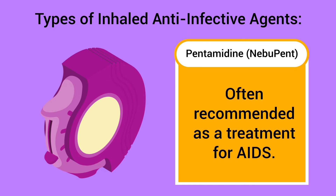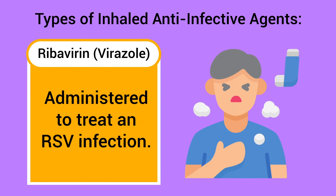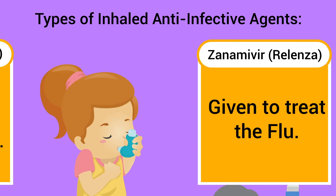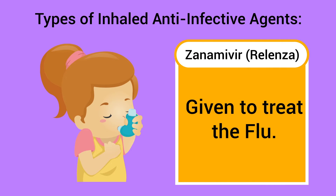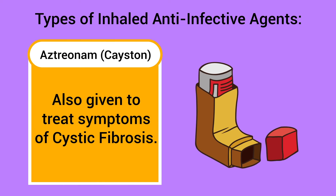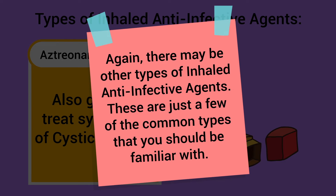Tobramycin is often given to patients with cystic fibrosis. Pentamidine is often recommended as a treatment for AIDS. Ribavirin is administered to treat an RSV infection. Zanamivir is given to treat the flu, and aztreonam is also given to treat symptoms of cystic fibrosis. There are many other types of inhaled anti-infective agents — these are just a few of the most common types you should be familiar with.